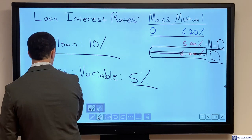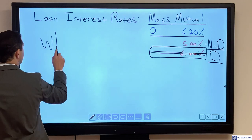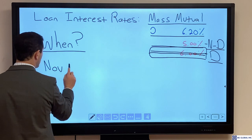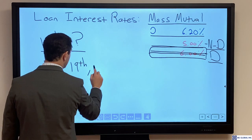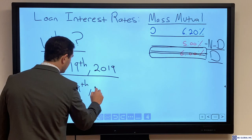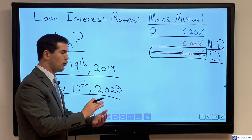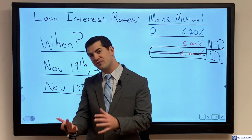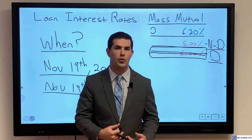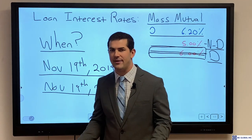An item we have not touched on yet: when does my variable loan rate adjust with MassMutual? If I started a policy on November 19th, 2019, then November 19th of each year is when the company will look at their loan rate as a whole and my loan rate as a policyholder — and that's what gets pegged to my insurance policy. It can adjust every year on my anniversary date, depending on what the actual variable rate is at that point in time.